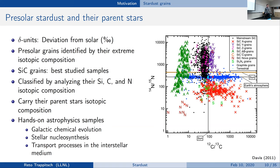Pre-solar grains are found incorporated in meteorites and can mostly be extracted — silicon carbides are extracted by essentially dissolving the meteorite itself and being left with the silicon carbide phase. Silicon carbide is not something you expect to form in the solar system, because we had more oxygen than carbon to start with. In a condensation calculation, oxygen sucks up all the silicon so you don't form a carbide structure. The silicon carbide found in meteorites must therefore come from a carbon-rich environment.